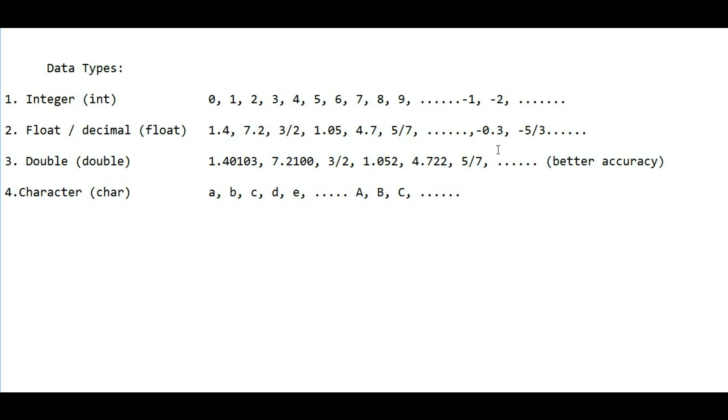Decimal numbers can be positive and can be negative. Decimal is any number with the real part and the decimal part - the whole part and a decimal part - like 1.4, 7.2, fractional 3/2, 1.05, 4.7, no matter what you have. It can also be negative.